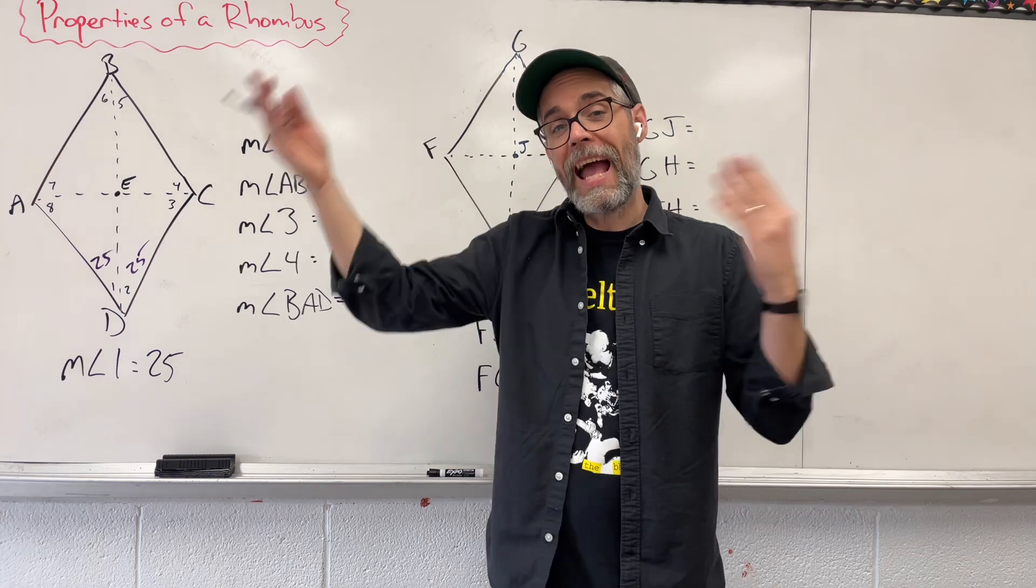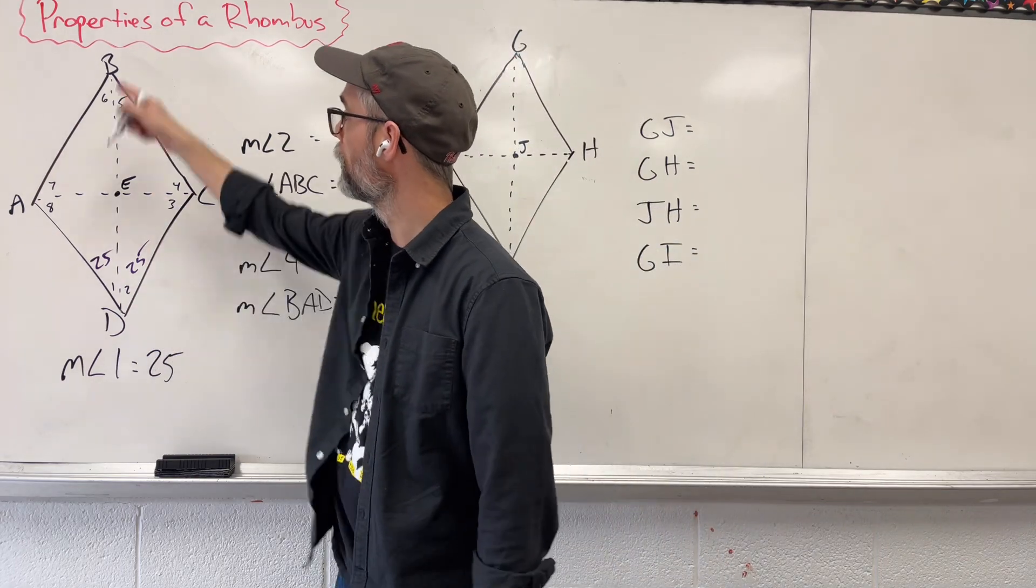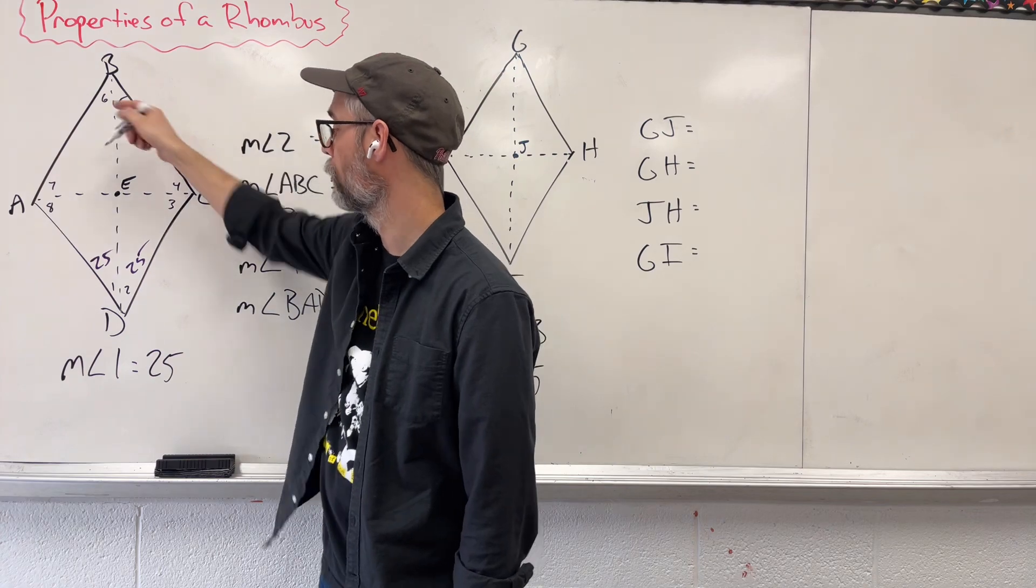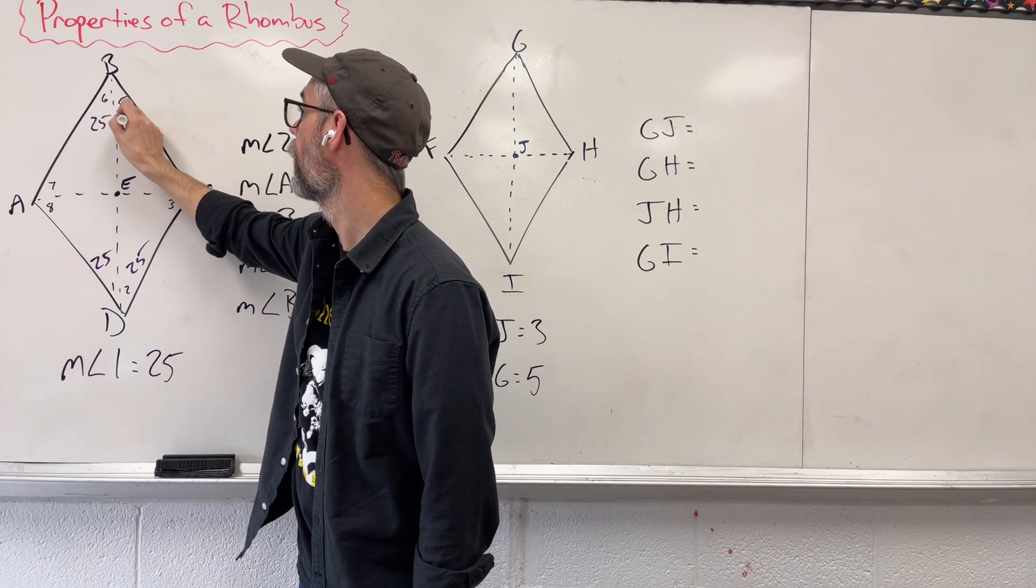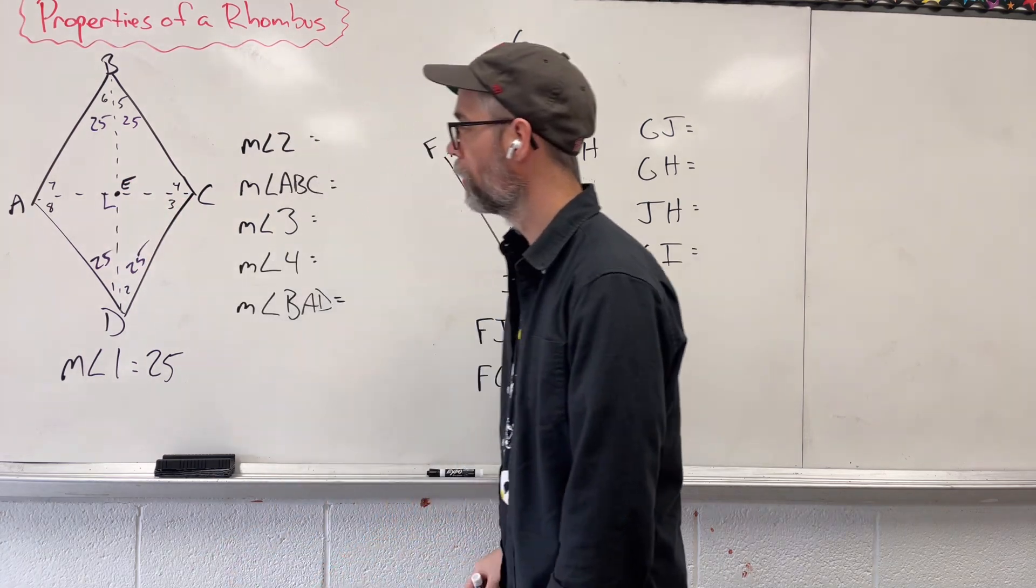Cool. So that means angle 2 here also has to be 25. Now, opposite angles are going to be the same. So if this is 50, this is 50. This gets bisected into two equal parts. So that's 25 and 25. We have a 90 degrees here in the middle.